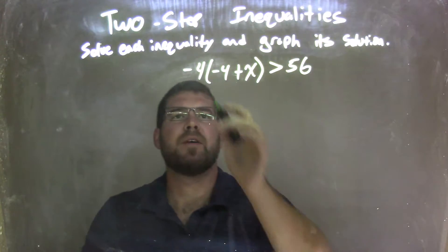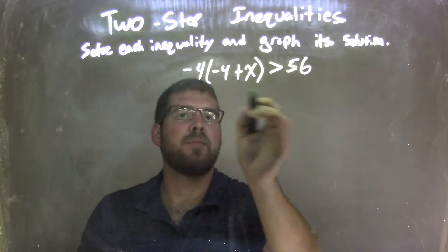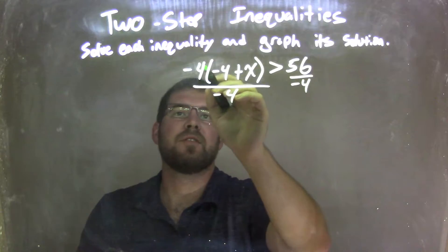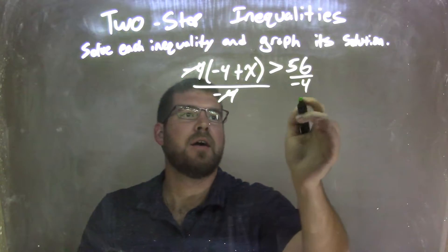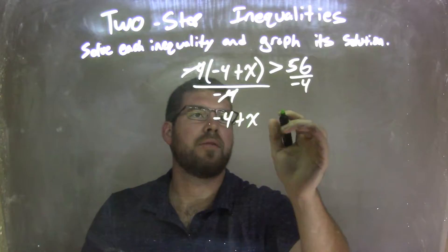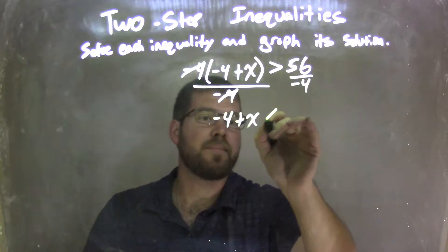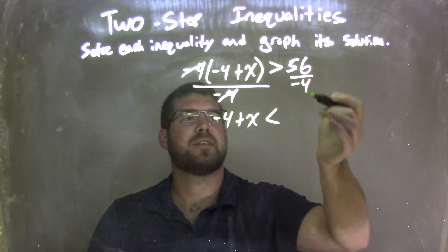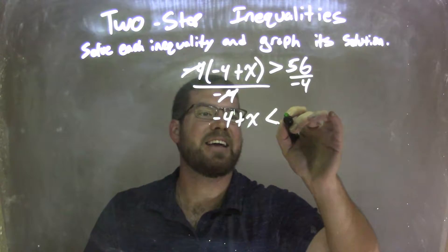My first step with that negative 4 is I need to divide both sides by negative 4. What that does is eliminate the negative 4 out here and then I'm left with negative 4 plus x on the inside, what was inside the parentheses. My inequality needs to flip from a greater than to a less than sign, and 56 divided by negative 4 is negative 14.